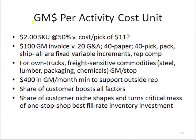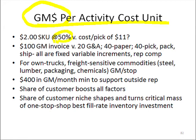Hi, this slide is just a summary slide of gross margin dollar per activity cost unit for you to benchmark within your own business. If we had a $2 item we were selling and we had a 50% margin in it, so we have a dollar of margin dollar, but we have a cost per pick of $11,